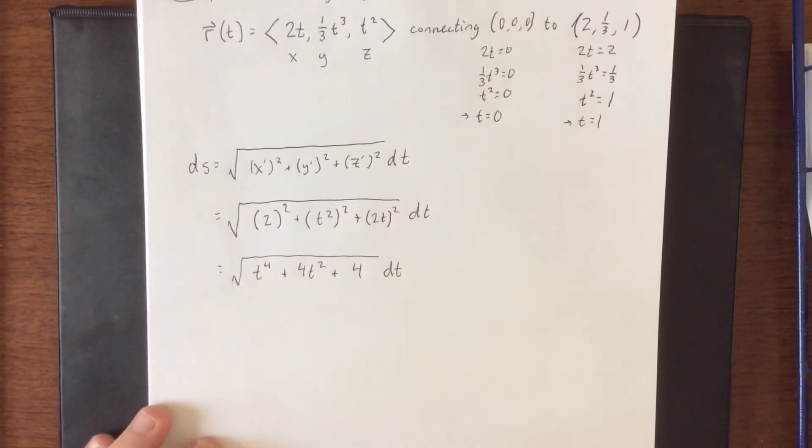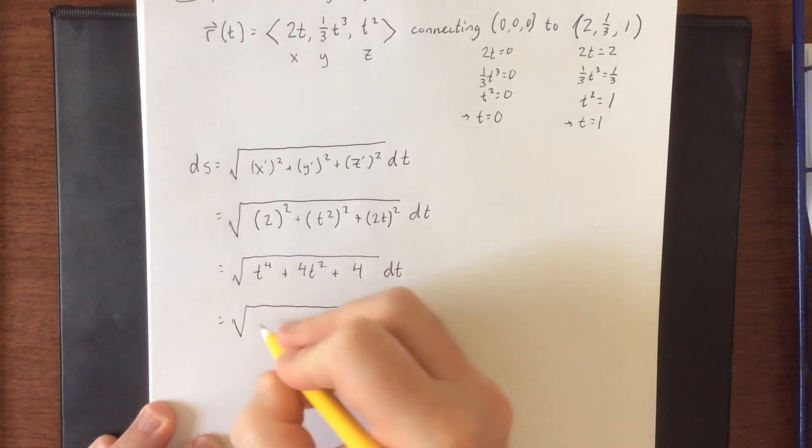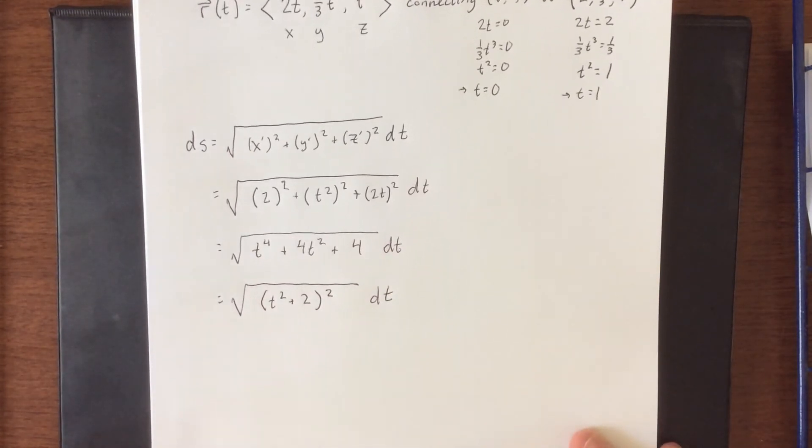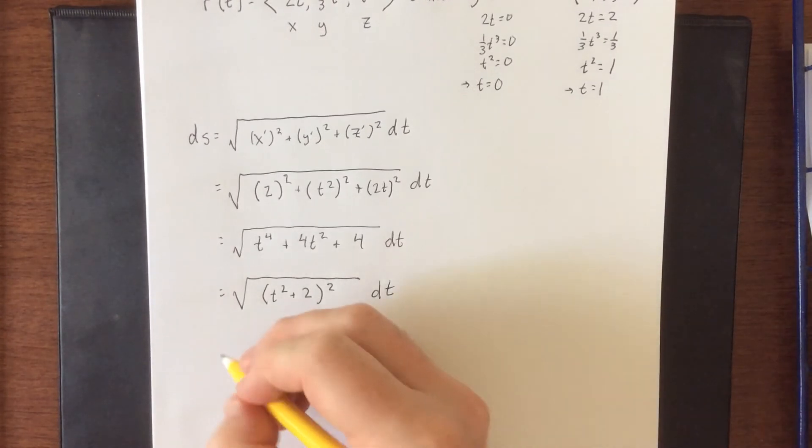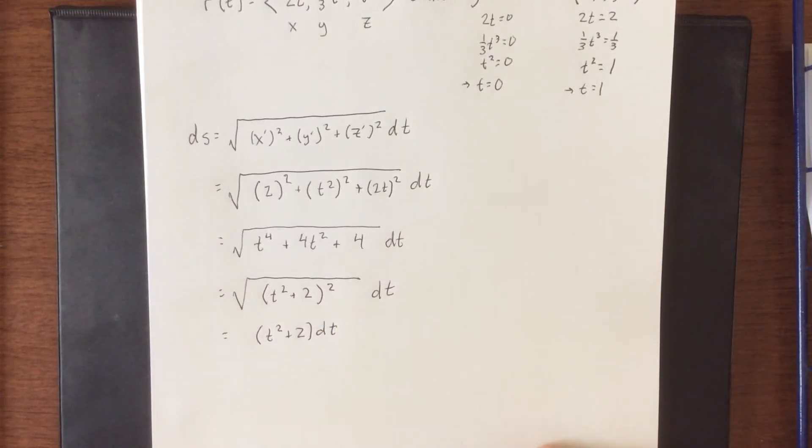The reason that I did that is because this actually factors pretty nicely. There was a reason that I started with such strange-looking component functions, so that it would turn out oh so nicely. Now, technically when I take the square root of something squared it would be the absolute value of this. The good news is that t squared plus 2 is always going to be a positive quantity anyway, so we don't need to worry about that.